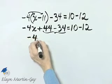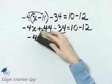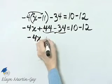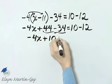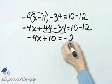So I have negative 4x, all right, that should be an x, negative 4x plus 10 is equal to 10 minus 12, that's negative 2.